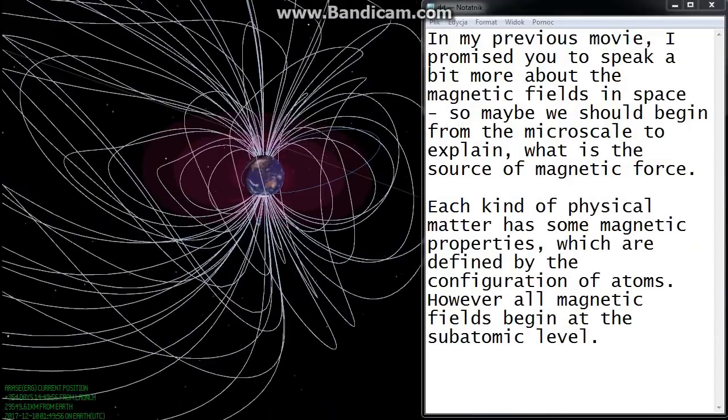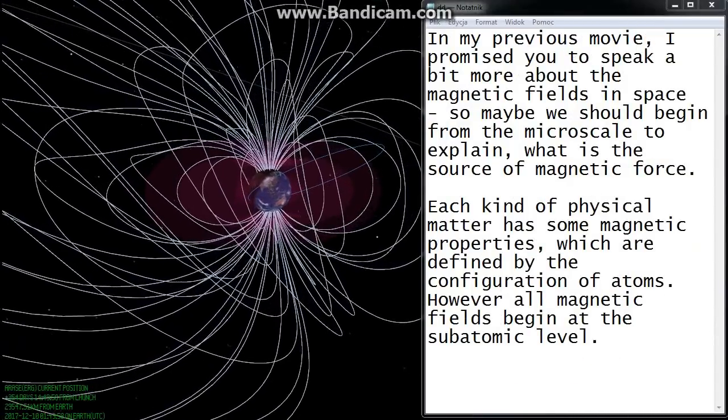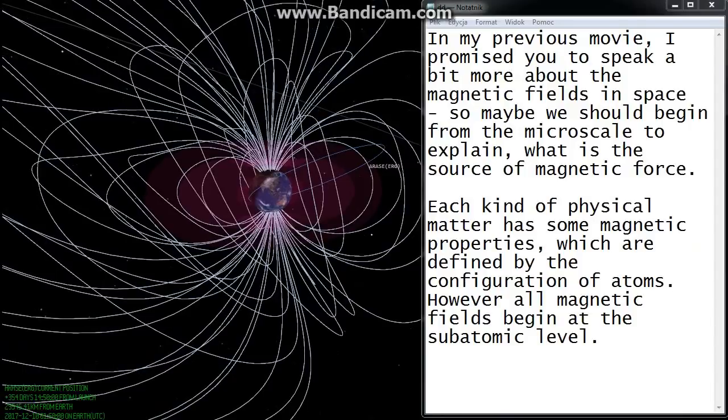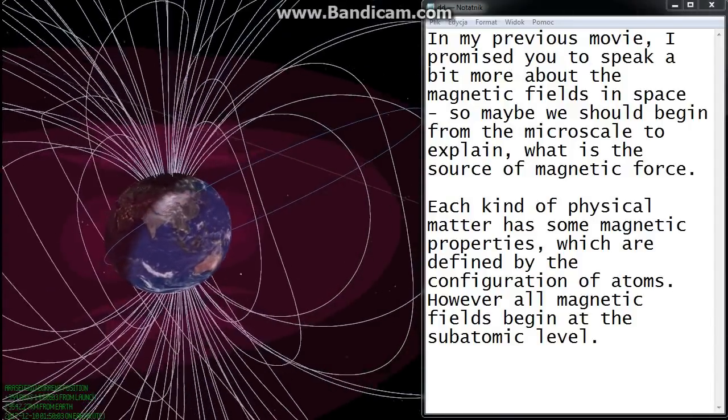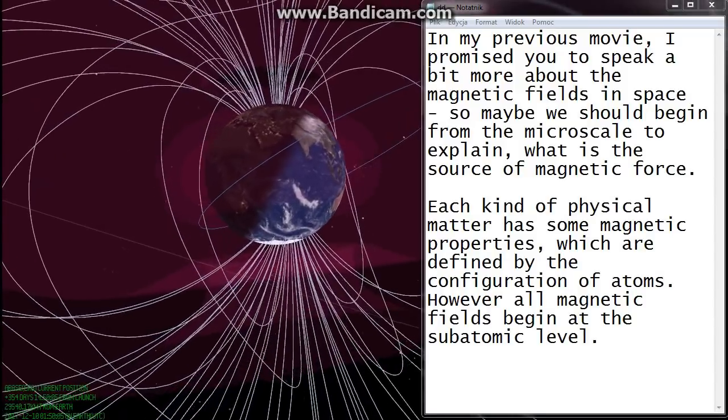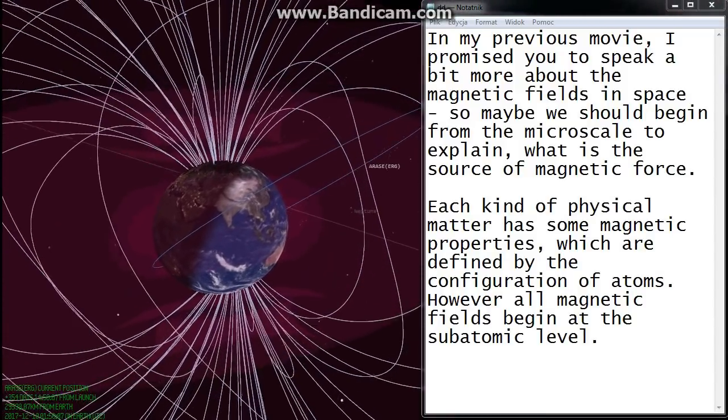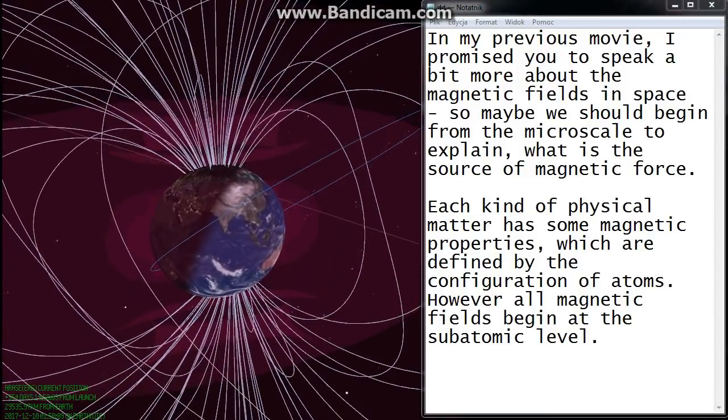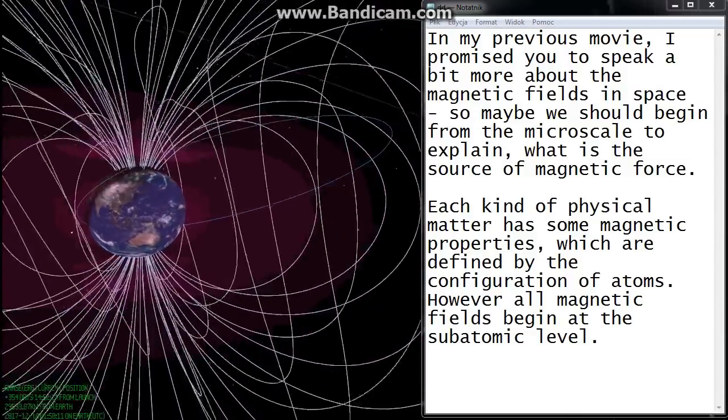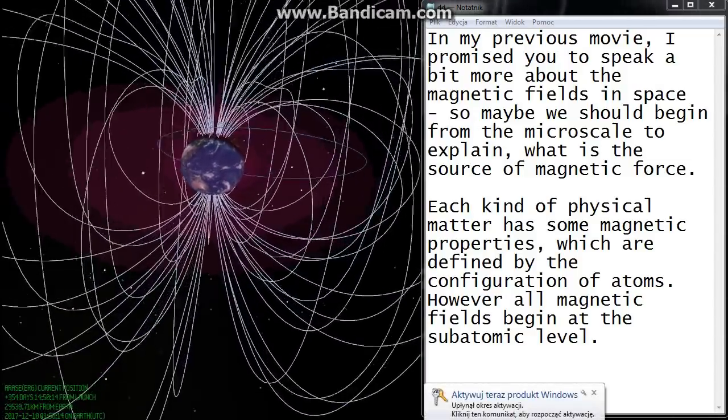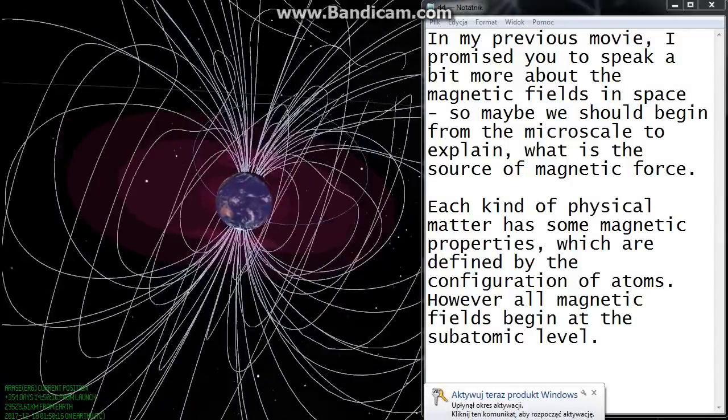In my previous movie, I promised you to speak a bit more about the magnetic fields in space, so maybe we should begin from the micro scale to explain what is the source of magnetic force. Each kind of physical matter has some magnetic properties, which are defined by the configuration of atoms. However, all magnetic fields begin at the subatomic level.